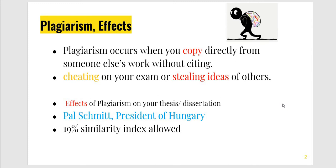What are its effects on your research? Every university checks plagiarism or similarity index with Turnitin software. If it is found more than 19%, your research work is rejected. If it is less than 19%, it is accepted. One very dominating event happened in the past — there was a president of Hungary, Pelschmidt. He written a thesis and it was full of copy-paste, and he became president later on.